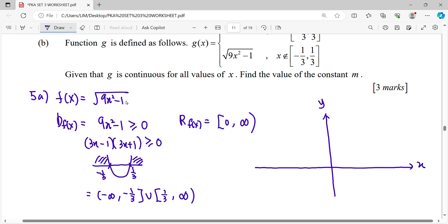So your graph only happened after 1 over 3 here, this side, and negative 1 over 3, this side. This region, this region, and this region.